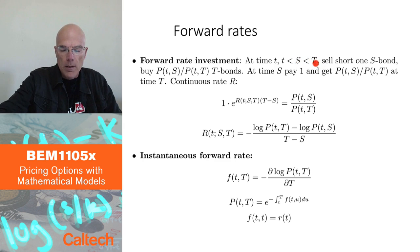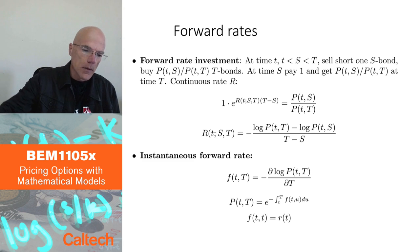The way to do that is to sell short one S bond, zero coupon bond with maturity S, paying $1 at maturity S. If we sell it short, we can buy, for that amount, a certain number of T bonds, bonds with maturity T. How many? Well, if we get P(t,S) for the S bond, that is the price of the S bond, we can buy P(t,S) over P(t,T) T bonds.